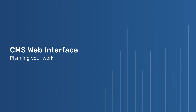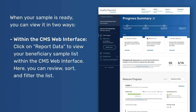CMS Web Interface – Planning Your Work. When your sample is ready, you can view it in two ways. Within the CMS Web Interface, click on Report Data to view your beneficiary sample list. Here you can review, sort, and filter the list.